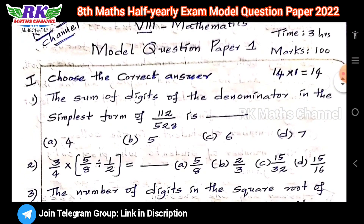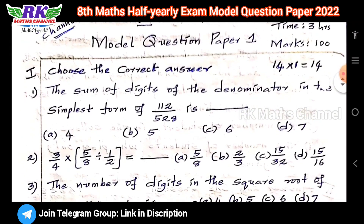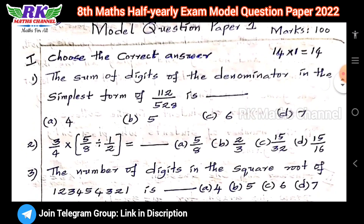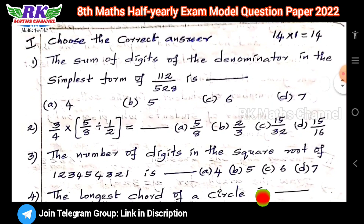The exam is total 100 marks, 3 hours time. The first section has 14 bits — objective type questions. We will cover the same portion of bits.